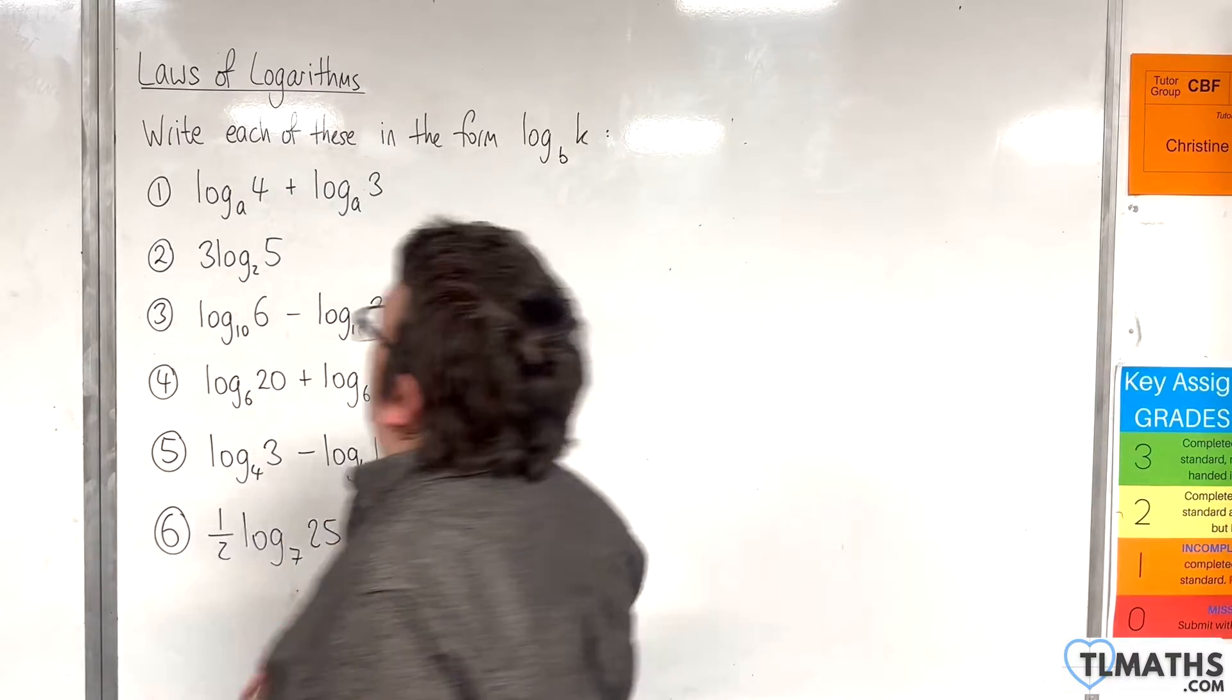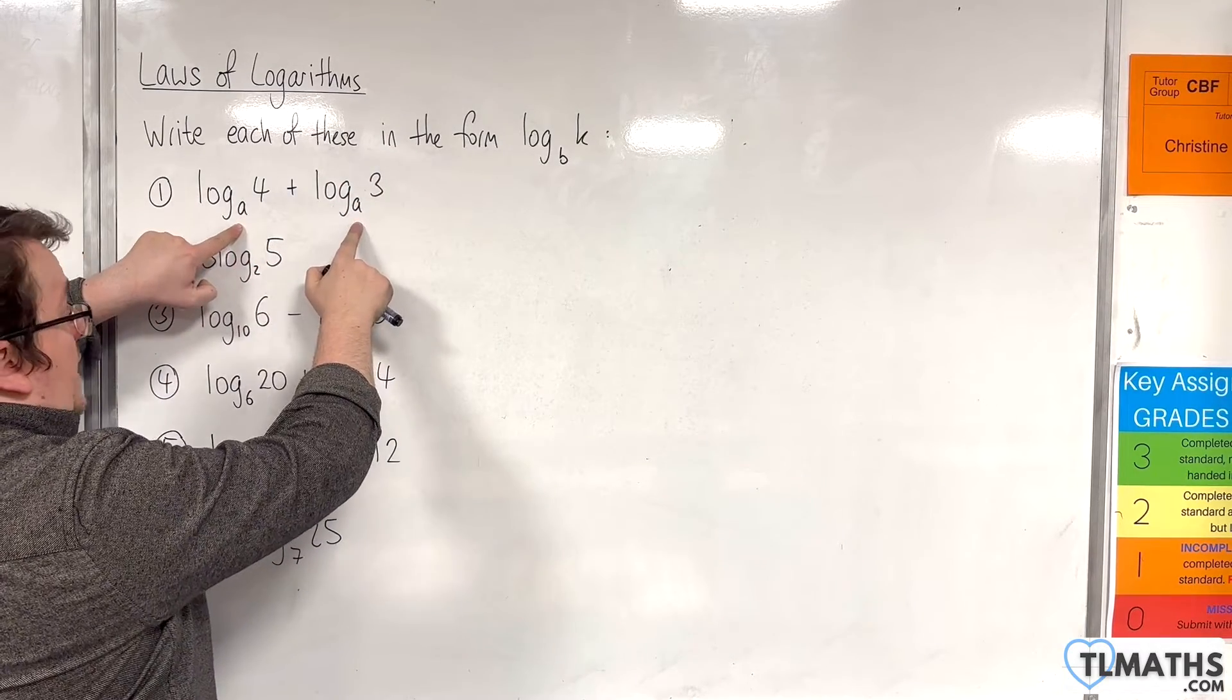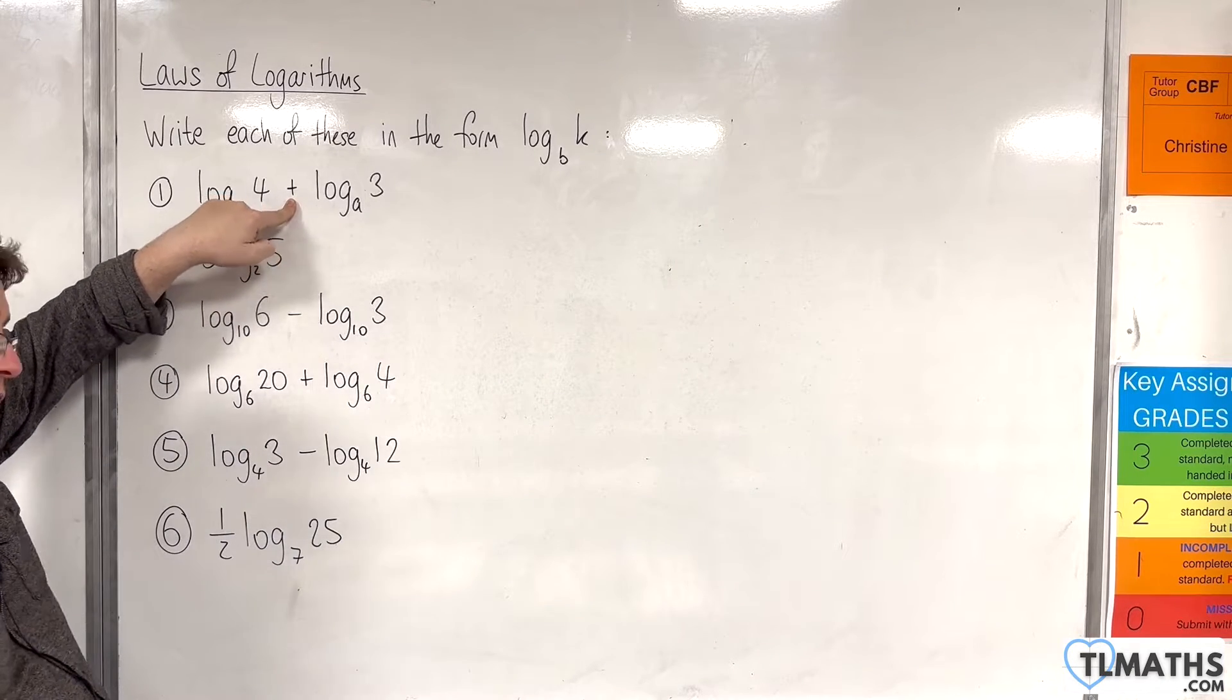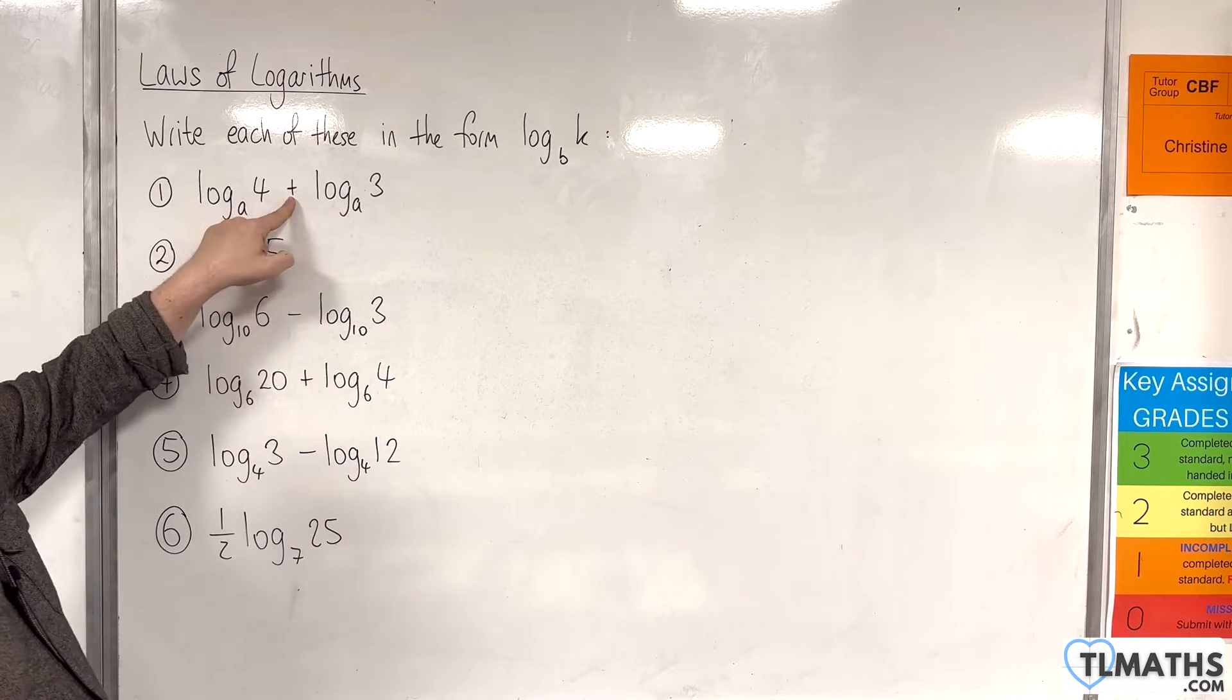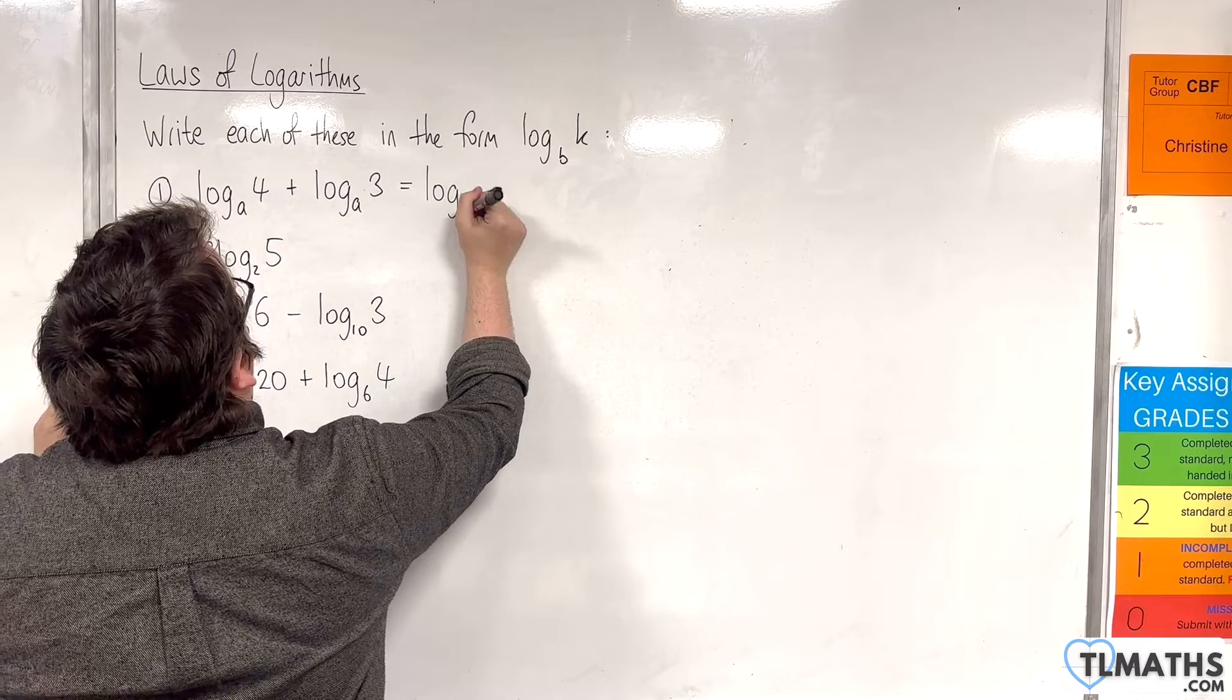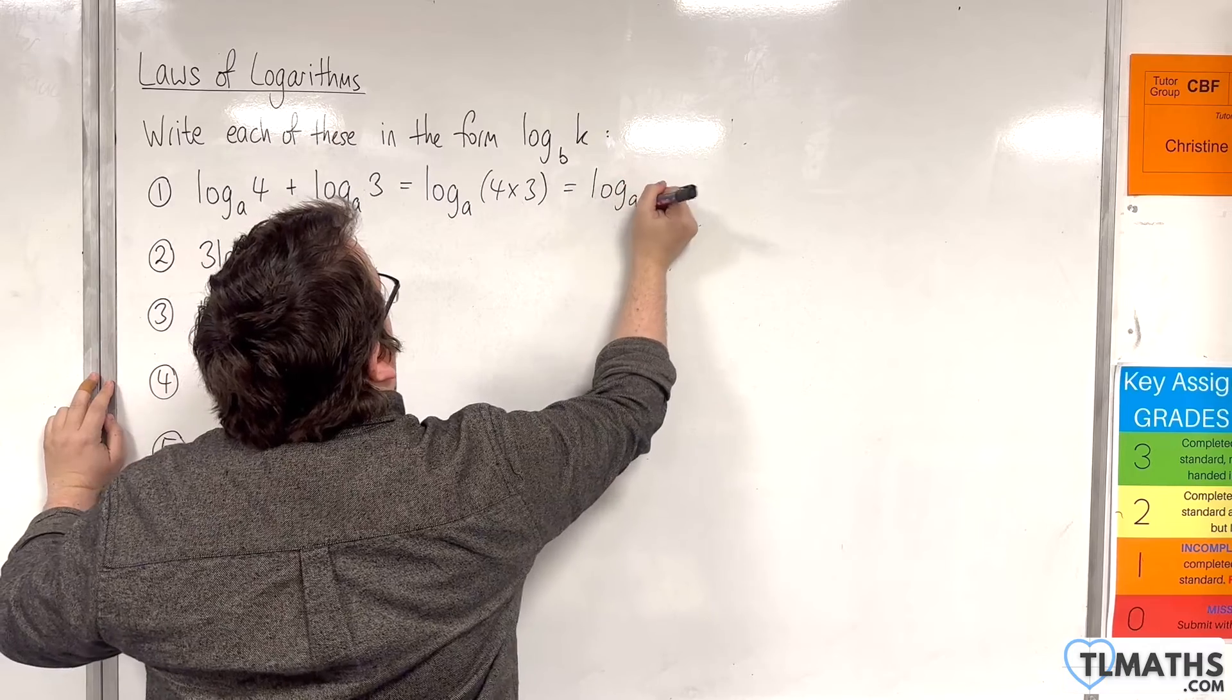So for the first one we've got log base a of 4 plus log base a of 3. The base number is the same, they're both a, which means I can combine them. And the plus sign there means that I can use the product rule. If it's a subtraction we use the quotient rule. So addition is the product rule and I can write that as log base a of 4 times 3. And so that is log base a of 12.